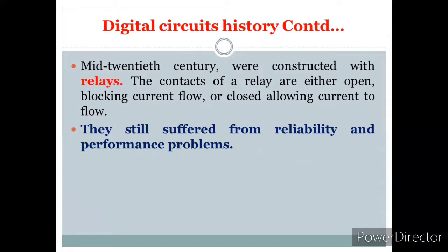In the mid-20th century, the relay was invented. A relay is essentially a switch — helpful for turning a circuit on and off. When it is on, it allows current to flow; when it is off, it stops the current. So it is a current control device. However, relays also had problems, specifically reliability and performance issues.